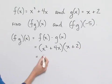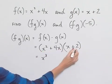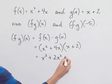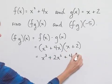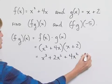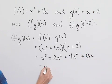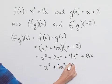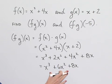Let's go ahead and do that multiplication. x squared times x is x cubed. x squared times 2 is going to be 2x squared. Plus, we end up with 4x times x, which is 4x squared, plus 4x times 2, which is 8x. We can combine our like terms to get our simplified result of x cubed plus 6x squared plus 8x. So this is the expression for fg of x.